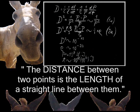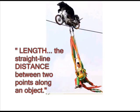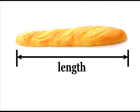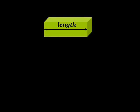The distance between two points is the length of a straight line between them. Length is defined as the straight line distance between two points along an object. So what have we learned? Is there no difference between the length of one loaf of bread and the distance between two of them? It is absolutely mind-boggling to learn that the mathematicians of this world have never noticed that there is a qualitative difference between length and distance.